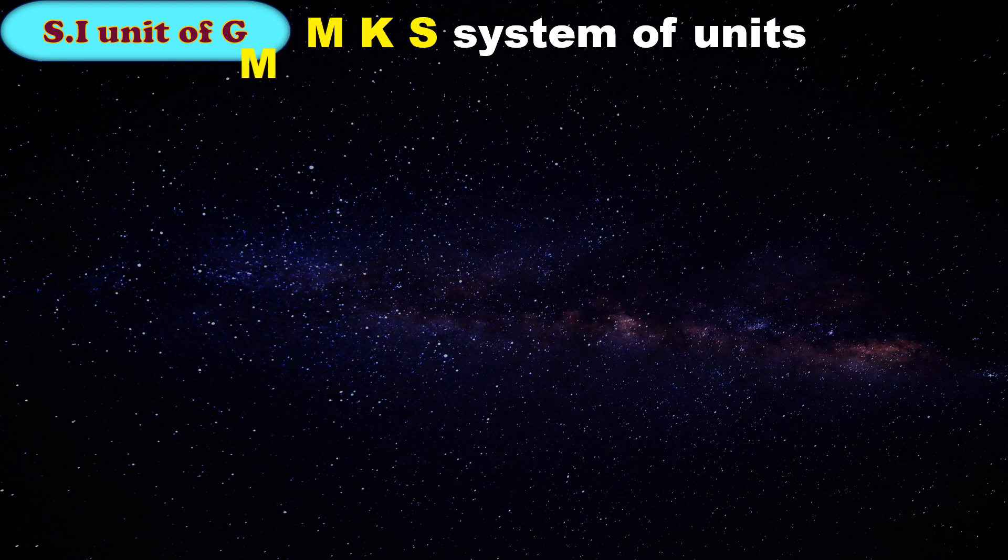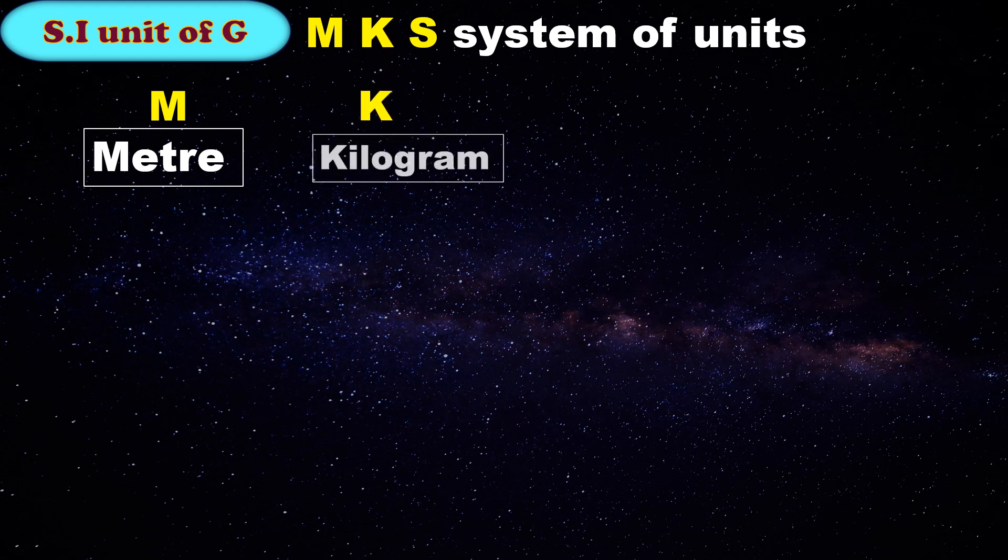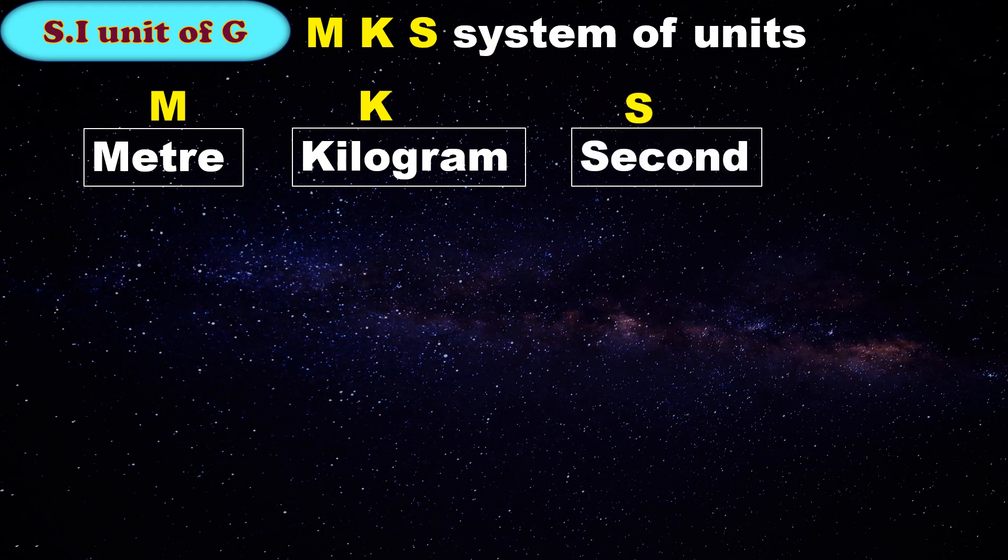SI unit is also known as the MKS system of units, where M represents meter which is for distance, K represents kilogram which is for mass, and S represents second which is used for time.